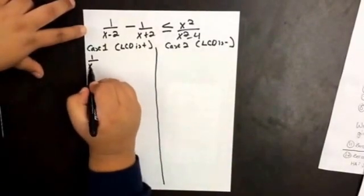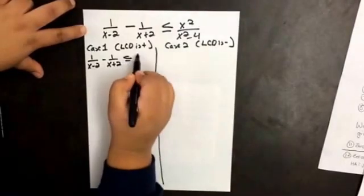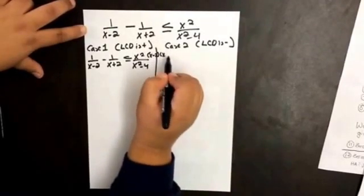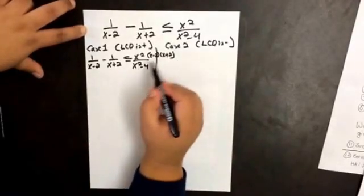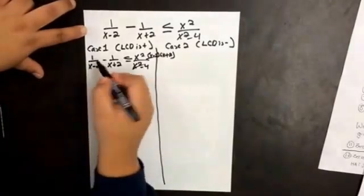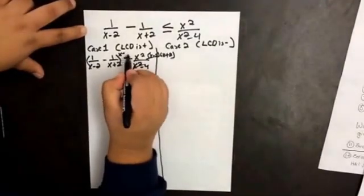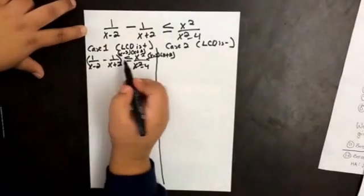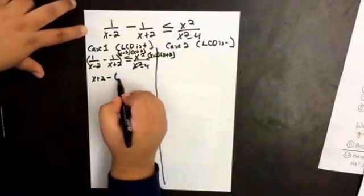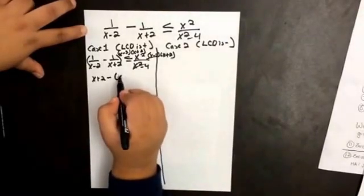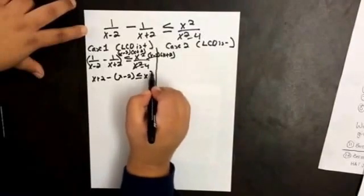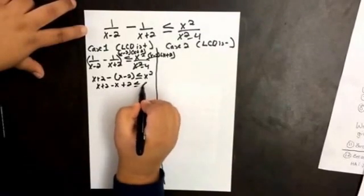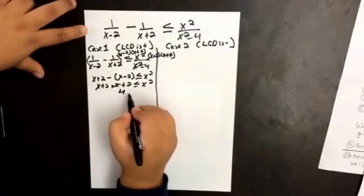So we want to solve for x. x squared minus 4 is the same thing as x minus 2 times x plus 2. So if I multiply this side, they cancel. If I multiply all of this by x minus 2 times x plus 2, the x minus 2 terms cancel and the x plus 2 terms cancel. So then I end up with x minus 2 is less than or equal to x squared. If we distribute the negative sign, the x's cancel. So 4 is less than or equal to x squared, which means that x is greater than or equal to plus or minus 2.